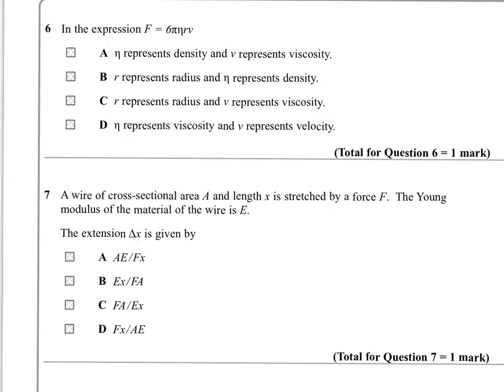Question 6. In the expression F equals 6 pi E to R V, E to represents density, and V represents viscosity. R represents radius. E to represents density. R represents radius. And V represents viscosity. E to represents viscosity. And V represents velocity. Well, you've done your book work. You'll know it's D.